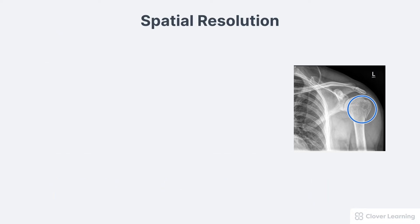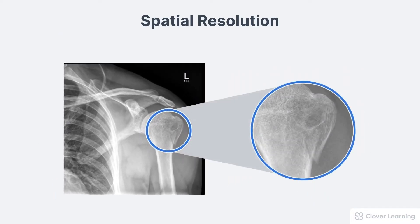You can also think of spatial resolution like this — it's the ability of the imaging equipment to demonstrate the difference between two objects that are very close together. In this shoulder image, the bone fragment is separated from the rest of the bone by a very tiny fracture line. Spatial resolution is the ability of the system to clearly demonstrate these small objects and the small spaces.